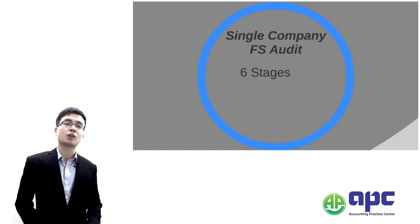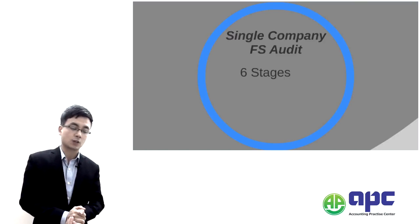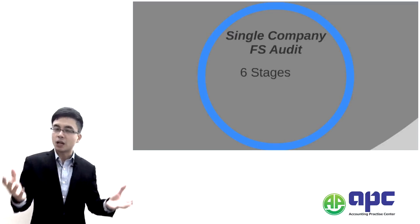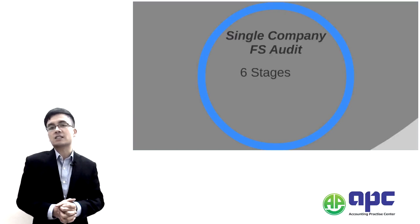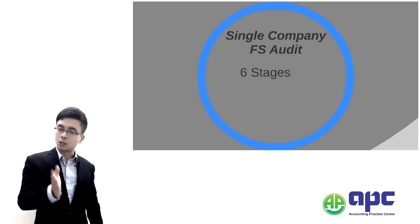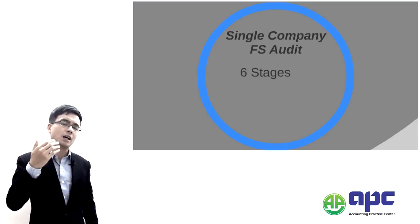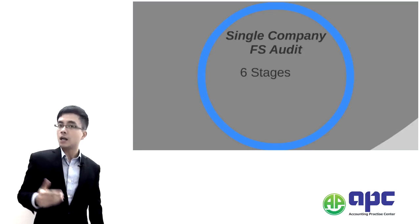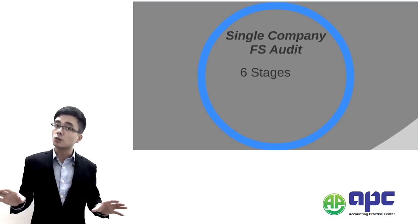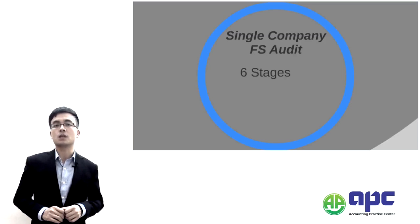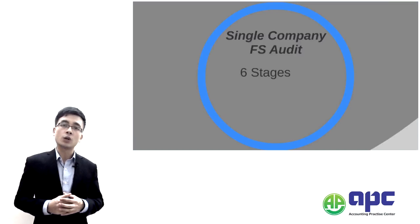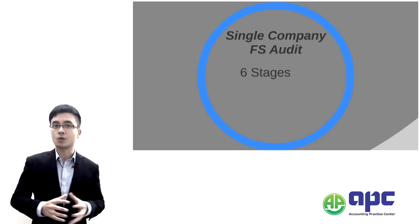During our course, we will go through those accounting standards. The single company's and group financial statements audit will involve six stages — for example, signing a contract with the client's company, then planning the audit, going through the systems, performing substantive testing, reviewing what we have done, and finally issuing our report. The auditing standards knowledge in the P7 syllabus, according to the examiner, will account for 30% of the total marks in the exam. It's important that you know the basic idea behind each auditing standard, and during the course we will combine that knowledge into actual cases.